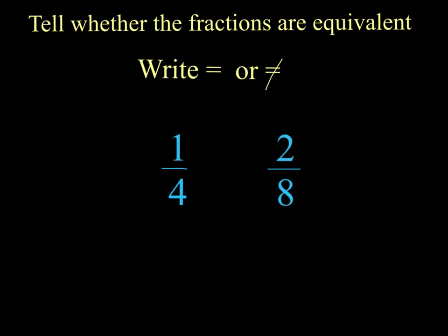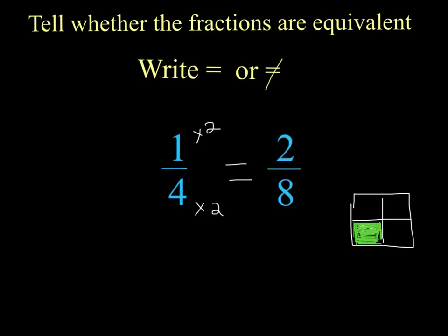Try to solve this one on your own, then press unpause to see if you agree. One-fourth is equal to two-eighths, because four times two is eight and one times two is two — therefore one-fourth is equivalent to two-eighths. Here's a quick model: starting with one-fourth, if I divide each fourth in half to make eight parts, I can count eight equal parts with two shaded in — confirming that one-fourth is equivalent to two-eighths.